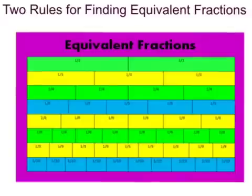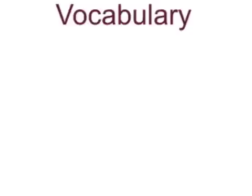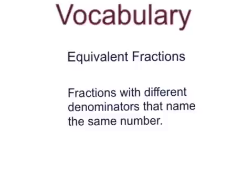Hello, and welcome to today's lesson about two rules for finding equivalent fractions. First, we are going to go over our one vocabulary term for today: equivalent fractions. These are fractions with different denominators that name the same number. For example, one-half is the same thing as six-twelfths. These numbers are the same size, although they have different numerators and denominators. We will look more at this later on in today's video.